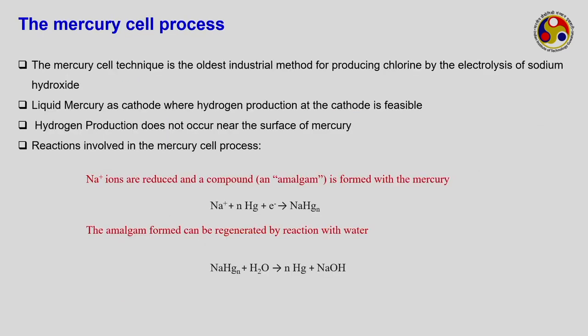The mercury cell technique is the oldest industrial method for producing chlorine by electrolysis of sodium chloride. Liquid mercury acts as the cathode. However, hydrogen is not evolved from the mercury cathode — due to the rate-determining step, hydrogen production is very low. Instead, sodium ions are reduced to form a sodium-mercury amalgam (NaHg).